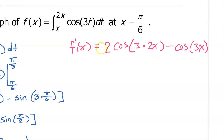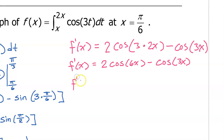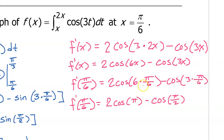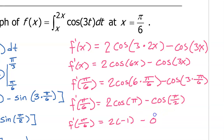3 times 2x is 6x. We need to find the slope at pi over 6, so we need to evaluate f prime at pi over 6. That will be 2 times the cosine of 6 times pi over 6 minus the cosine of 3 times pi over 6. 6 times pi over 6 is pi, and 3 times pi over 6 is pi over 2. So f prime at pi over 6 equals 2 times the cosine of pi minus the cosine of pi over 2, which is negative 2. That's the slope.